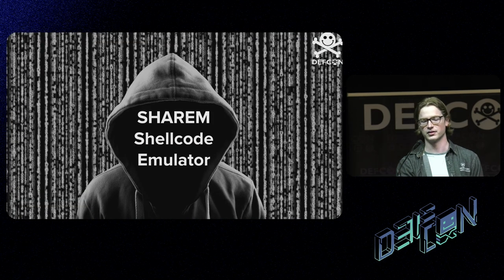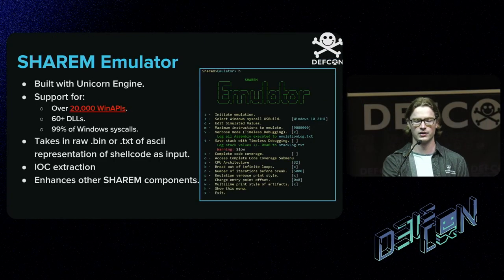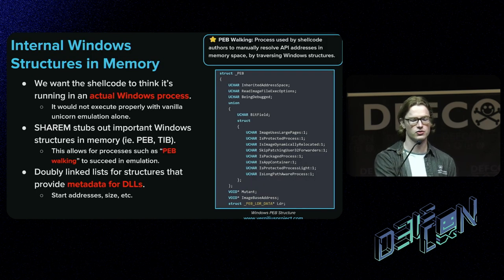Sherem's emulator is built with the Unicorn CPU emulation framework. It can hook and log over 20,000 Windows APIs across over 60 DLLs, with support for approximately 99% of syscalls as well. Sherem analyzes raw .bin files and hex byte representations of shellcode. A highlight is its use for high-level indicator of compromise analysis — emulation provides a detailed summary showing what Windows APIs were used, what file paths were accessed, and what URLs were contacted. All knowledge gathered from emulation is leveraged elsewhere in the tool.